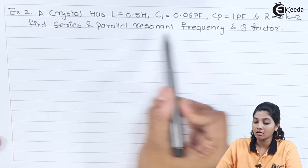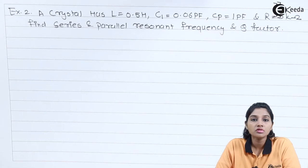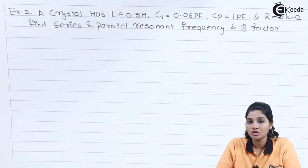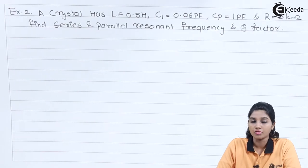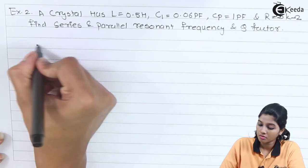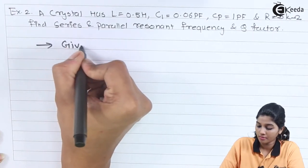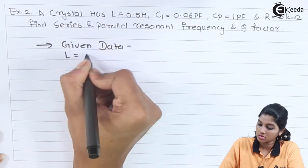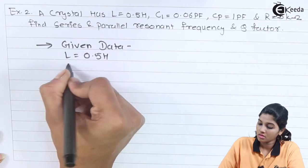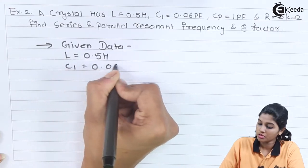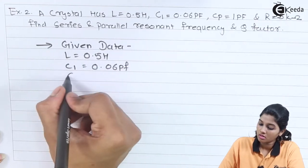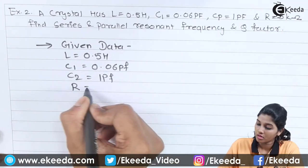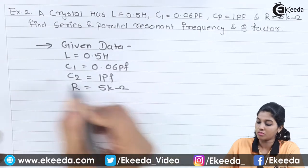Find out series and parallel resonant frequency and Q factor. Here, instead of C2, they have mentioned C2 as Cp, which is used for calculation of parallel resonant frequency. Given data: L is 0.5 Henry, C1 is 0.06 pF, C2 is 1 pF, and R equals 5 kΩ. C2 is nothing but Cp as mentioned in the problem.